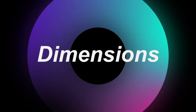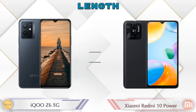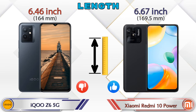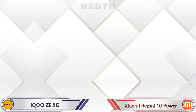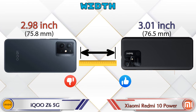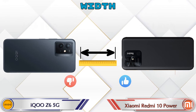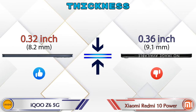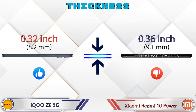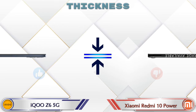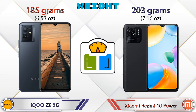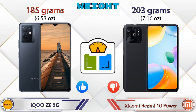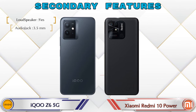Now let's check the dimensions. Length: iQOO Z6 5G is 6.46 inches and Redmi 10 Power is 6.67 inches. Width: iQOO Z6 5G is 2.98 inches and Redmi 10 Power is 3.01 inches. Thickness: iQOO Z6 5G is 0.32 inches and Redmi 10 Power is 0.36 inches, making it thicker. Weight: iQOO Z6 5G is 185 grams and Redmi 10 Power is 203 grams, making it heavier.